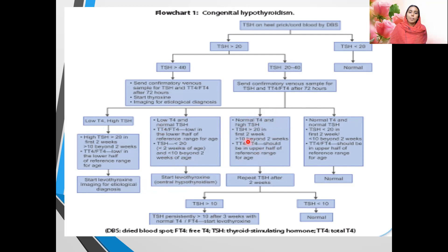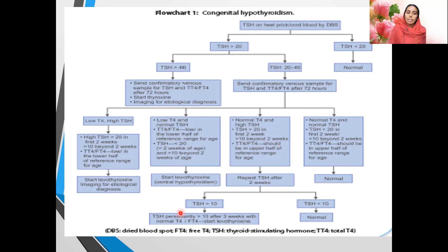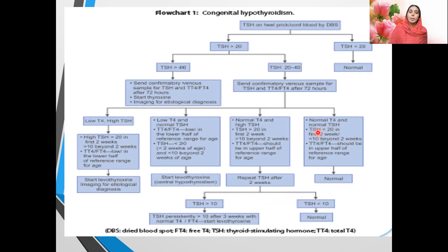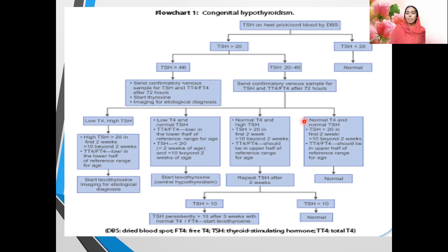Normal T4 with high TSH (more than 20 in first two weeks, more than 10 beyond): repeat TSH after two weeks. If TSH is persistently more than 10 beyond three weeks with normal T4 or FT4, start L-thyroxine. If less than 10, it is normal. Normal T4 (upper half of reference range) and normal TSH (less than 20 in first two weeks, less than 10 beyond two weeks): this is normal. T4 must be in the upper half of the reference range to be considered normal.